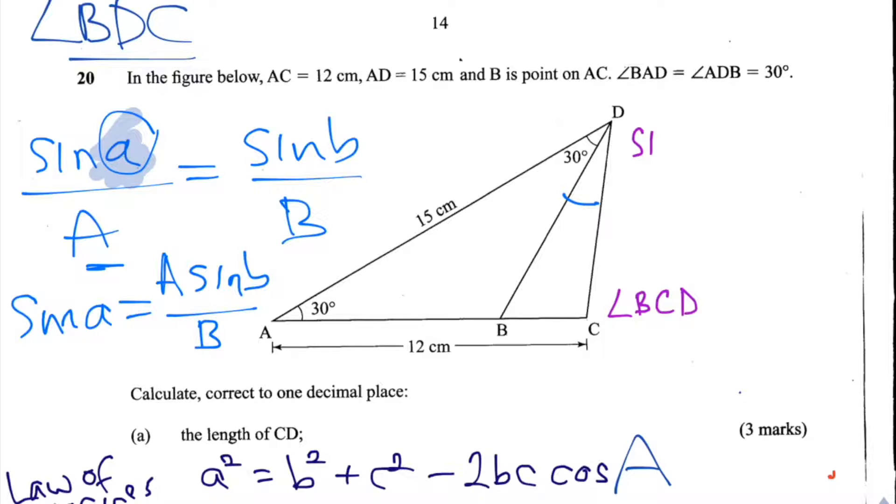And then we're going to have to take the inverse of this trigonometric function, the sine function, from both sides. So we get A is equal to sine to the minus one A sine B over B.